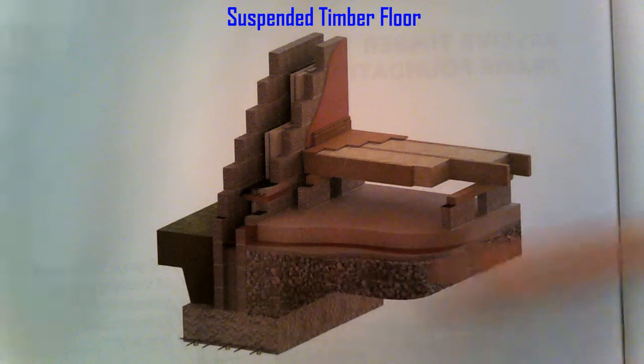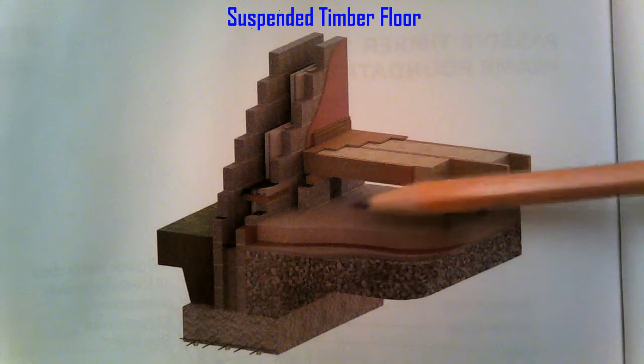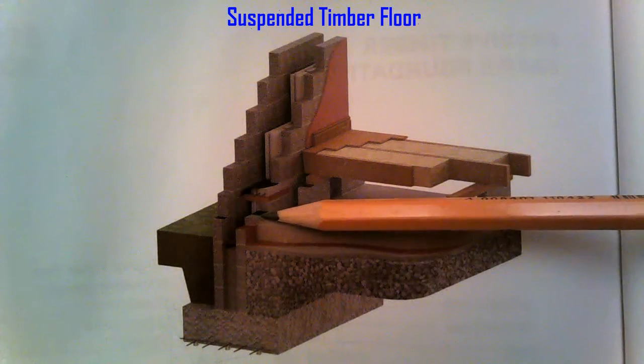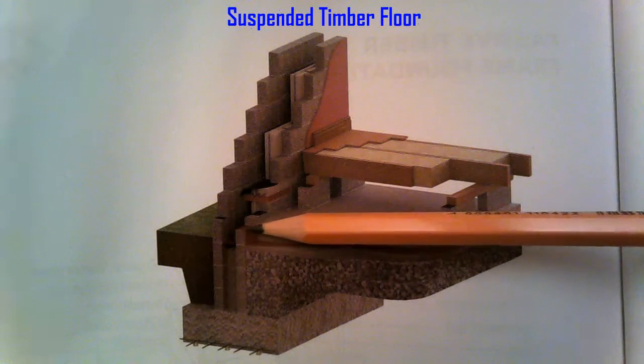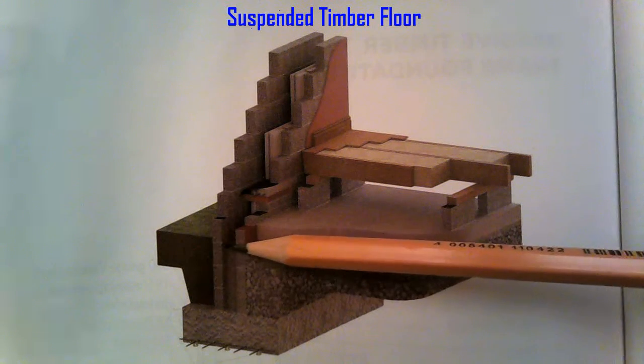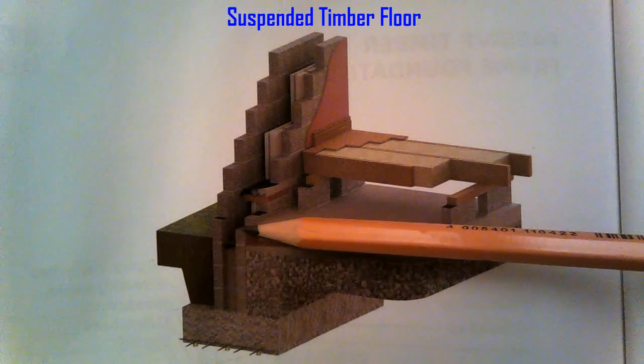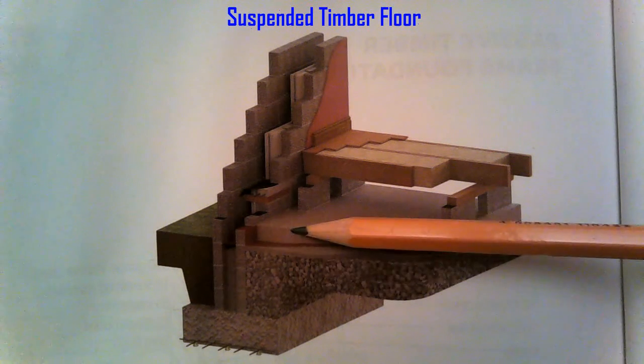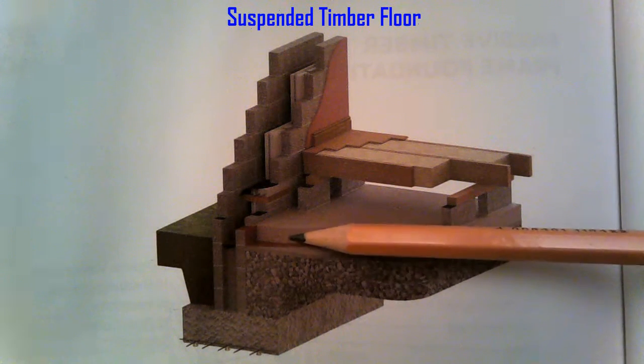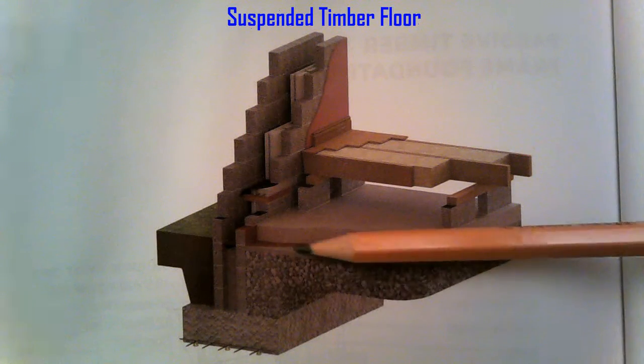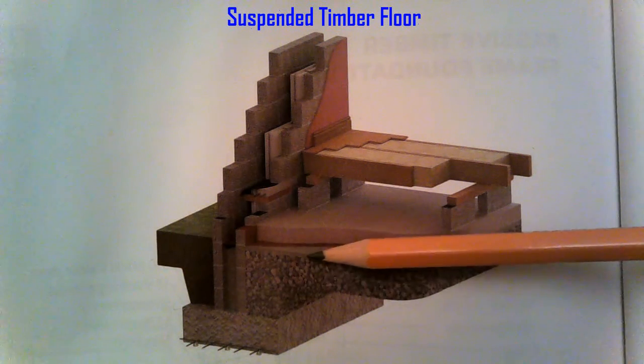The difference with a suspended timber floor this time is your subfloor is not directly in line with your DPC, it's now stepped down and in line with your radon barrier. When you come up your third block, you come up your 150mm block here for your radon barrier, and that's where your 150mm subfloor goes right in under your radon barrier. Have your binding.